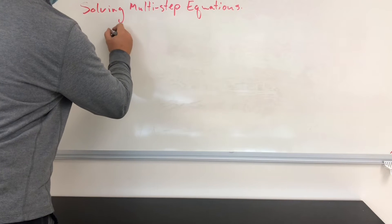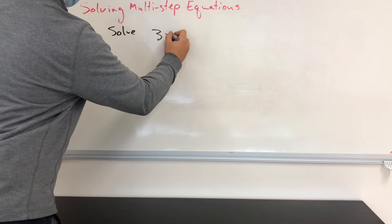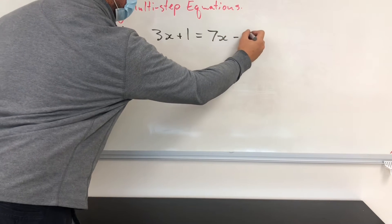So let's consider the equation, we'll just solve this one first. 3x plus 1 is equal to 7x minus 5.